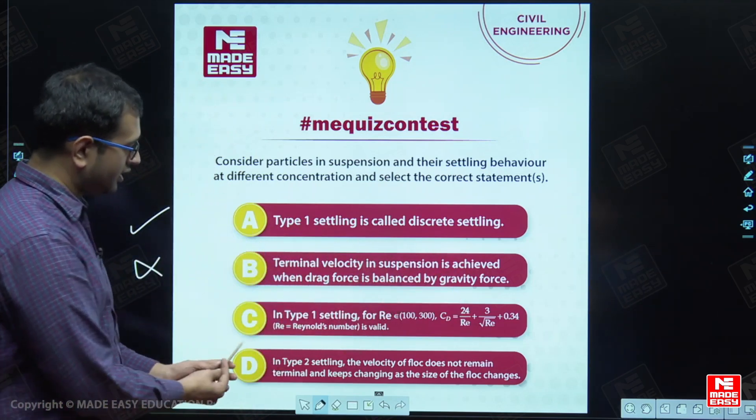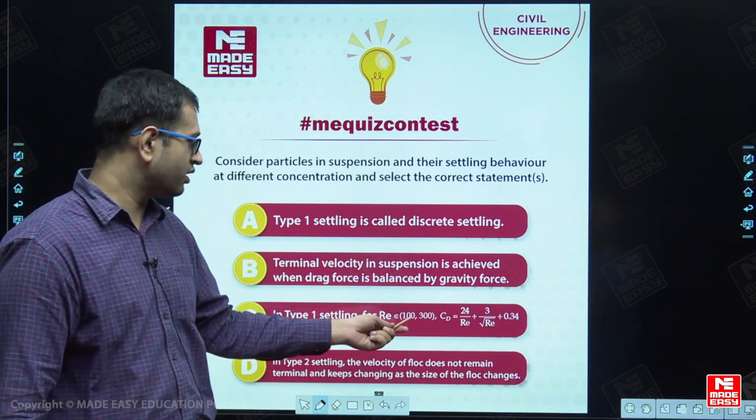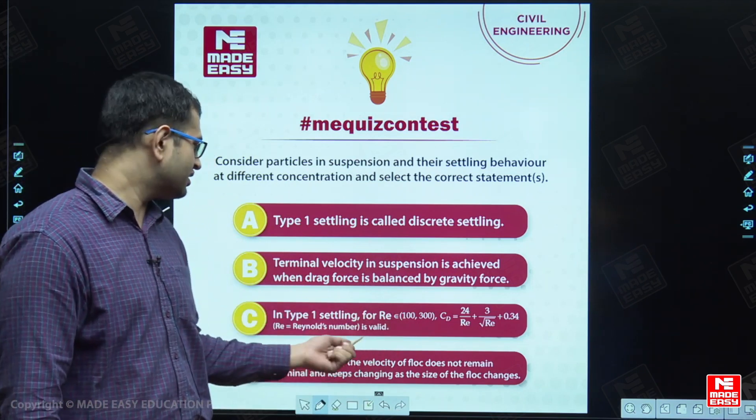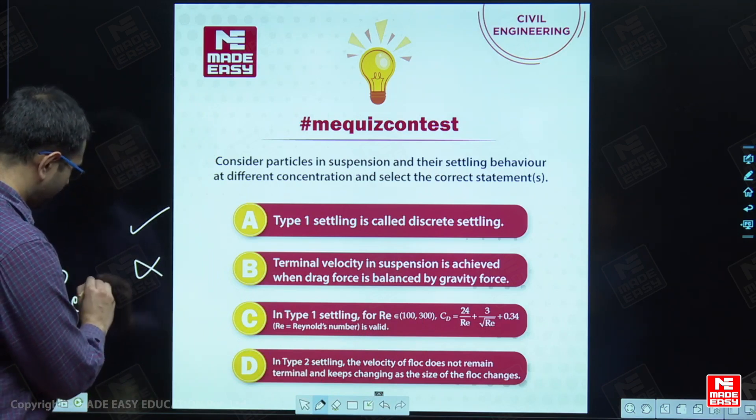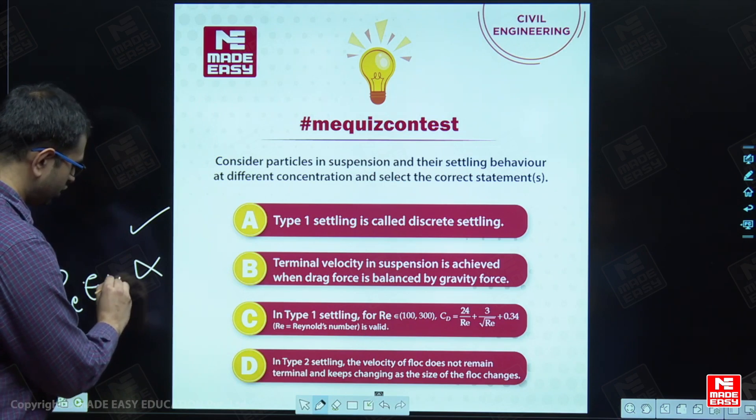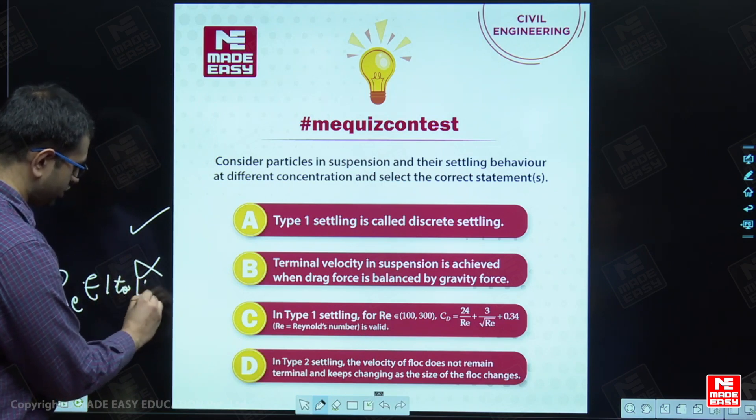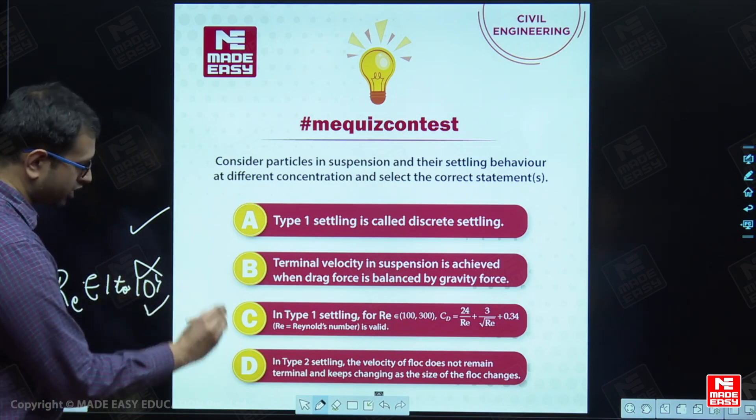And in type 1 settling for Reynolds number 100 to 300. Yes, this range is within the range of transition of 1 to 10 to the power 4. So, this statement is also correct.